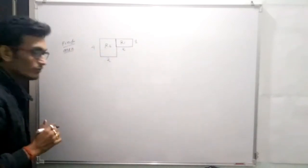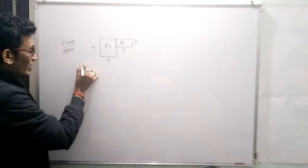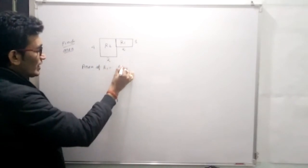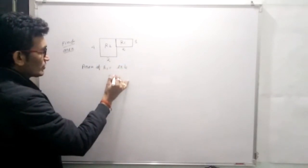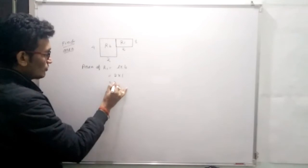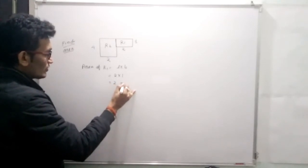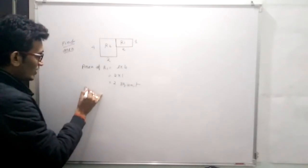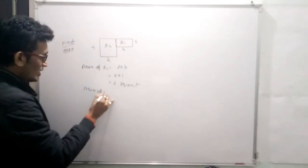So you can easily find out the area of R2. Area of R1 equals length into breadth: 2 into 1 equals 2 square units.